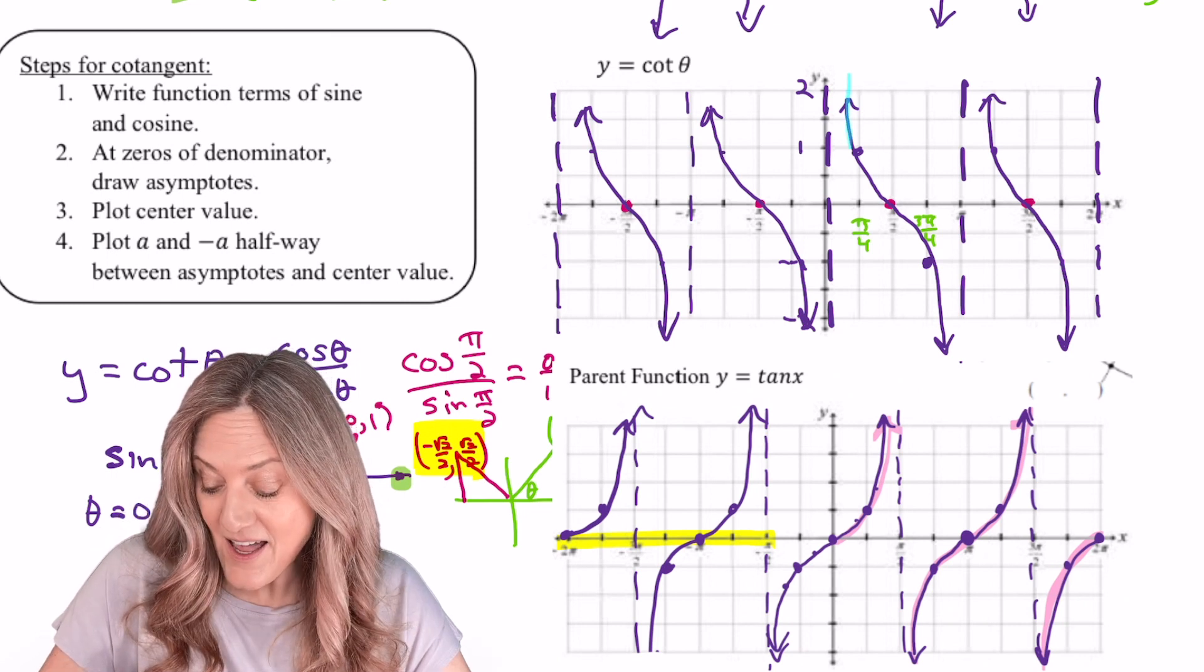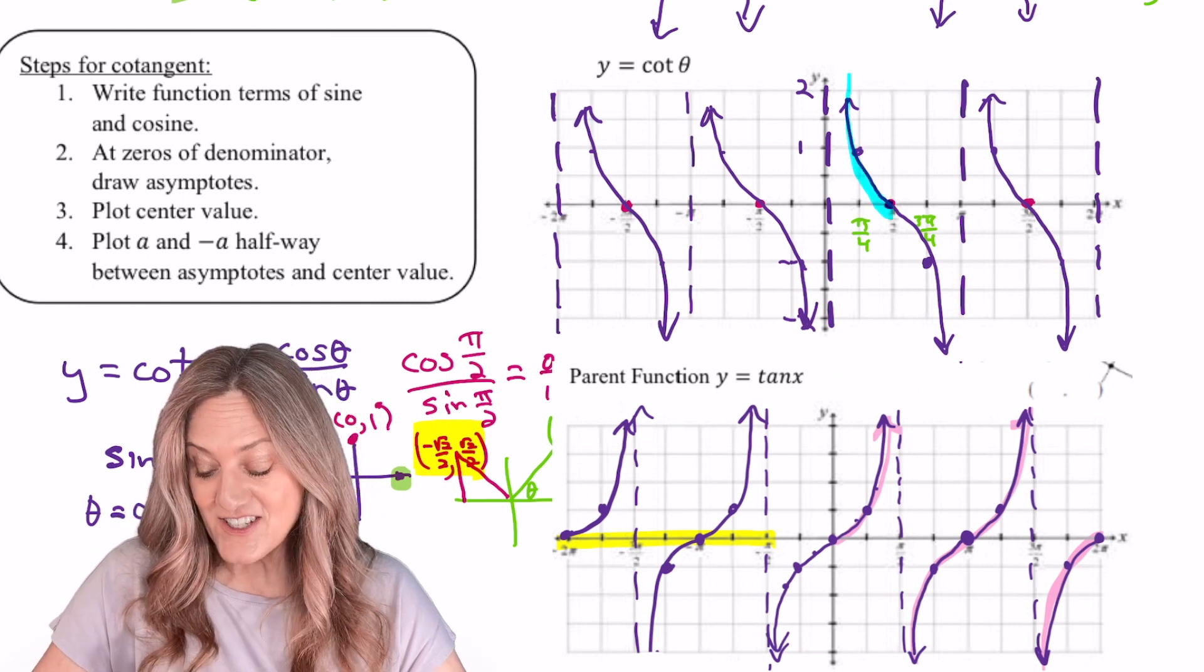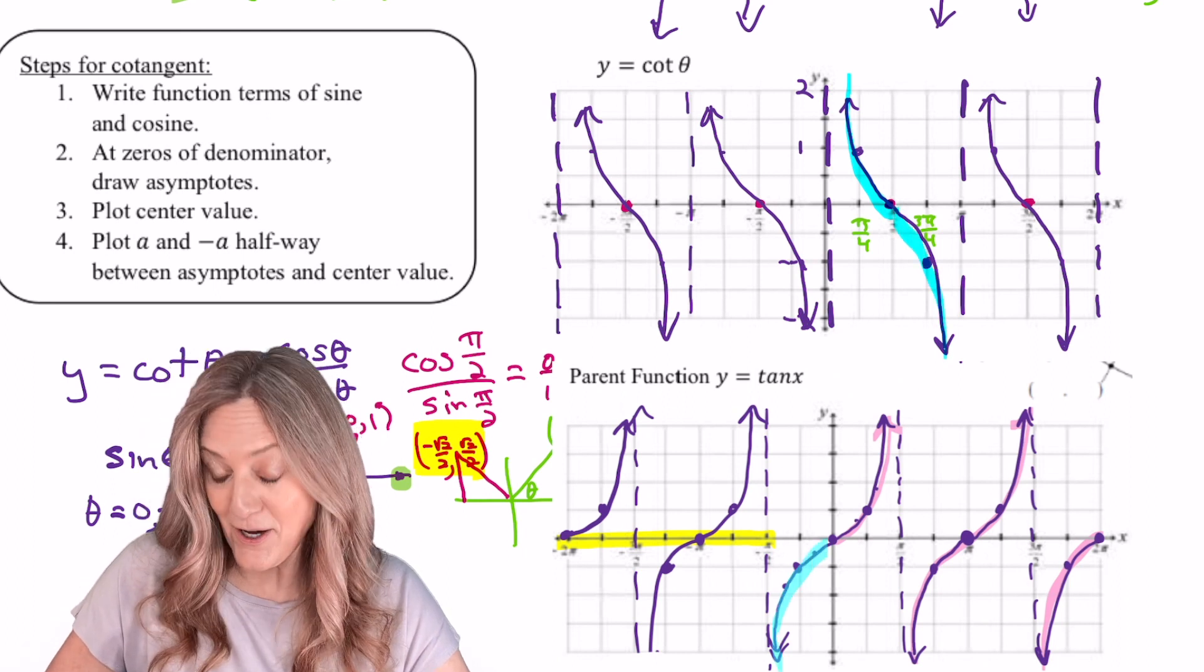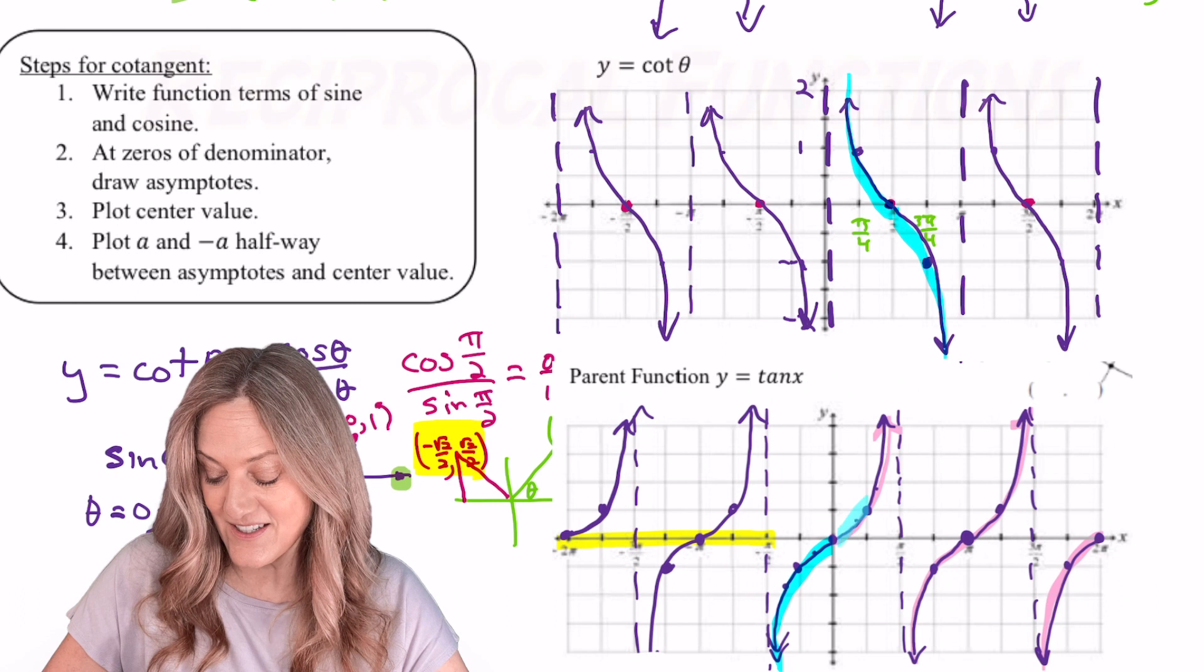Cotangent starts up, concave up, and changes to concave down. Tangent starts down, concave down, and changes to concave up.